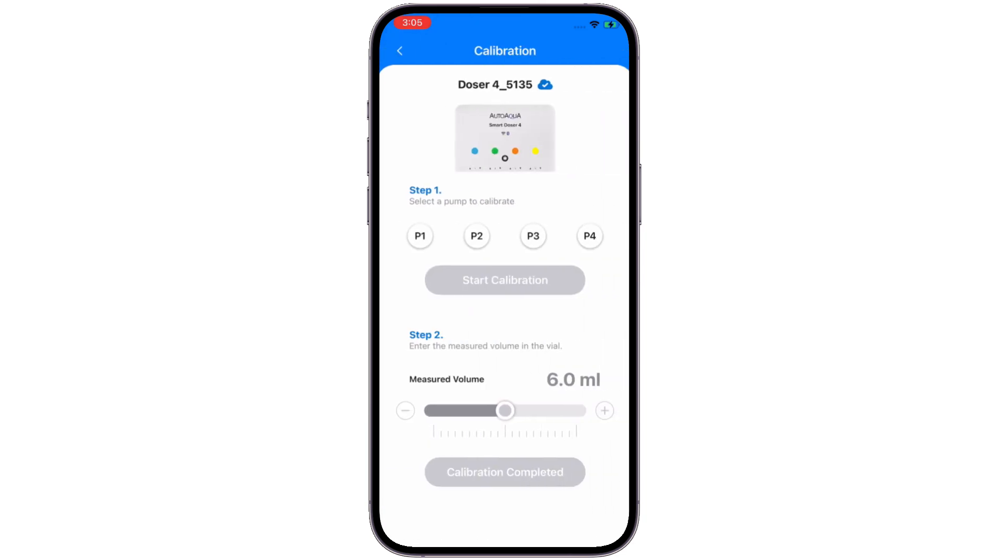Select calibration in the menu below. Select a pump to calibrate. Then press start calibration.